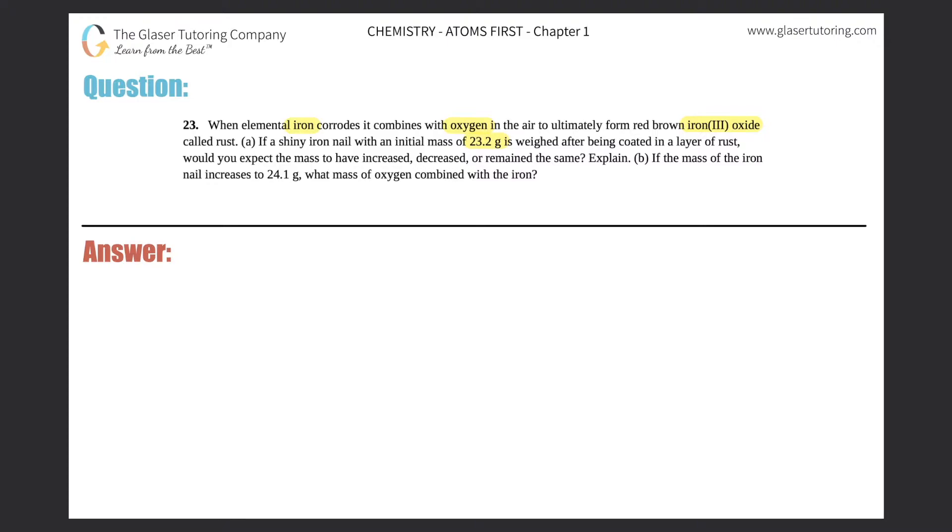So first let's answer A and then I will go on to B. So here we have a shiny iron nail. This is my iron nail and it says that it had an initial mass - initial means at the beginning - of 23.2 grams.